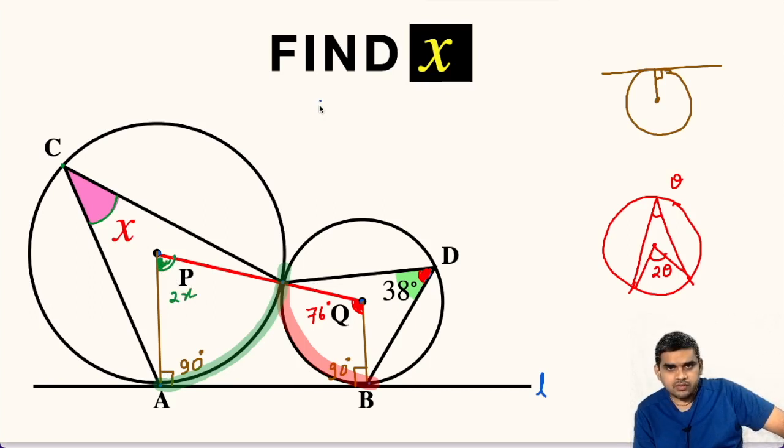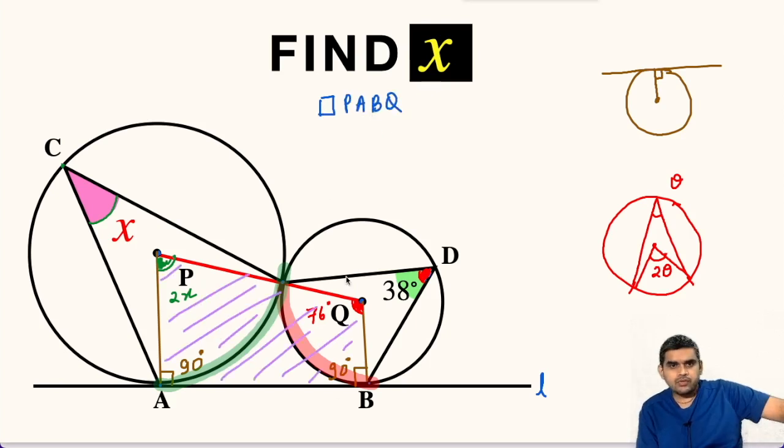Now, let us focus on quadrilateral PABQ. We know that sum of all the interior angles of a quadrilateral is 360 degrees. So, from here, we can write 2x plus 90 degrees plus 90 degrees plus 76 degrees is equal to 360 degrees.